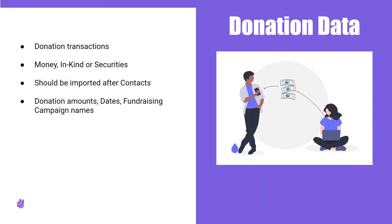The next type is donation data, our second most common type. These are donation transactions — any transaction your organisation has received that was eligible for a donation receipt is considered donation data. We'll accept all types: transactions can be money, in-kind donations, or securities such as stock options. Donation data should be imported after contacts — import all the donors on your donation spreadsheet as contacts first, and then your donations will be grouped neatly under each donor's profile. Think donation amounts, dates, fundraising campaign names, and receipt info.